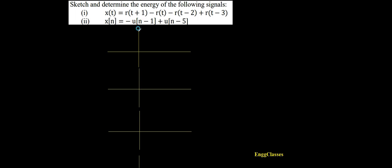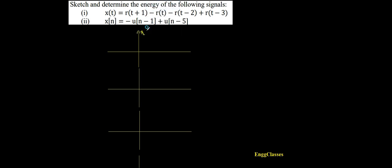Let me indicate the first signal as r(t+1). r(t+1) is a ramp signal t shifted to the position minus one, so t minus (minus one) becomes t plus one. The signal starts from minus one and goes to infinity. This is r(t+1).